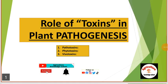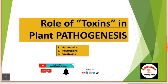Hello friends, welcome to Agriculture Knowledge School YouTube channel. Today we will discuss the important topic of plant pathology: the role of toxins in plant pathogenesis. Toxins are made by different pathogens in the host, and there are three types: pathotoxins, phytotoxins, and vivotoxins.